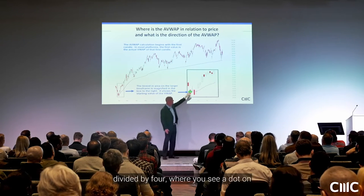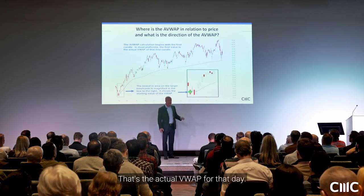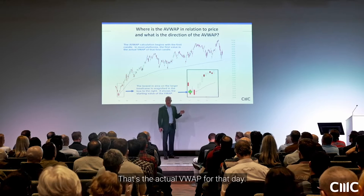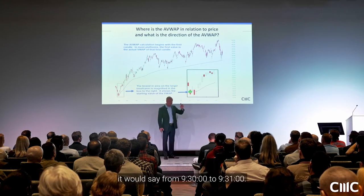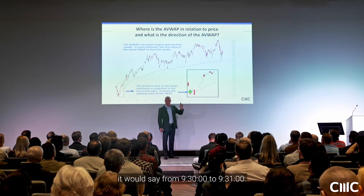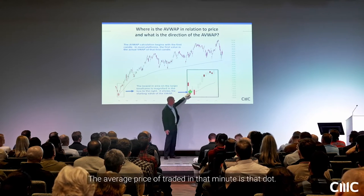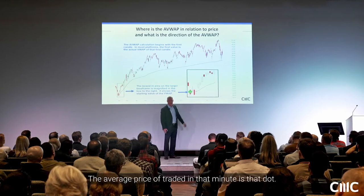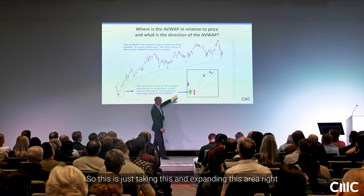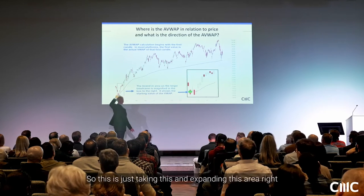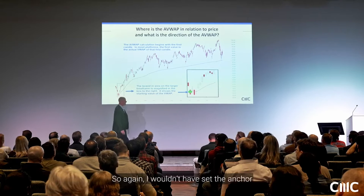Make it OHLC divided by four. Where you see a dot on that first candle — that's the actual VWAP for that day. Or if this were a one-minute chart, it would show that from 9:30 to 9:31 the average price traded in that minute is that dot. That's where your anchor begins. So this is just expanding this area so we can take a closer look.